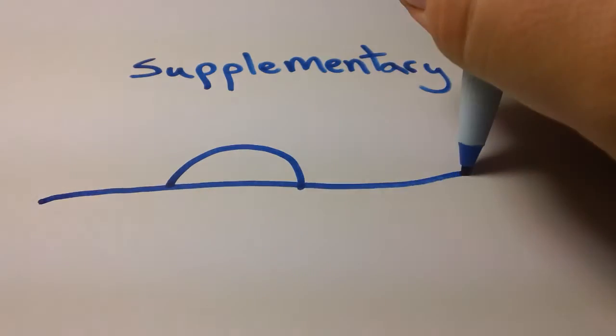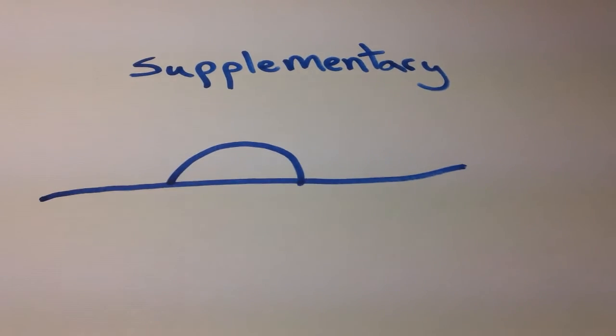Essentially you can kind of think of it as two ways. You can think of it as a semi-circle, 180 degrees, or you can think of it as a straight line. I know that line kind of curved off at the end, I'm sorry.